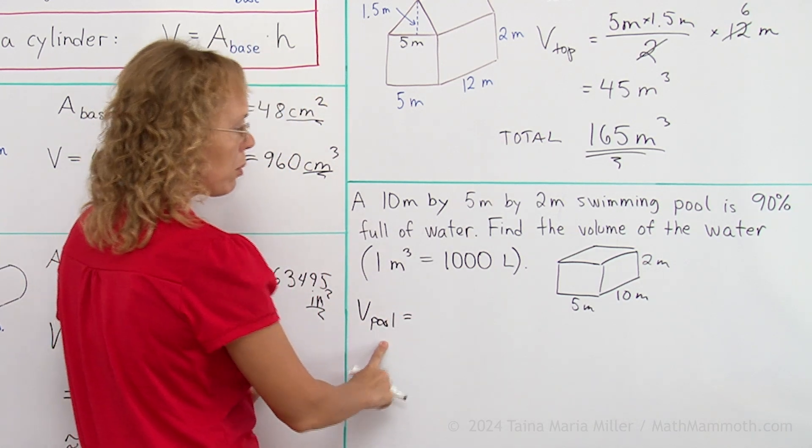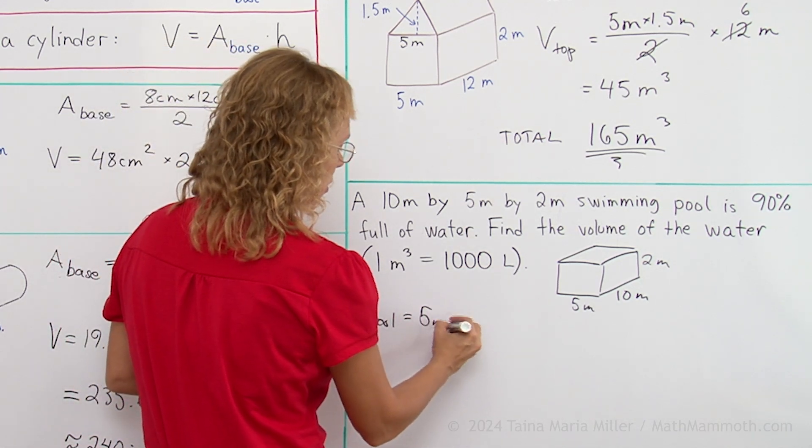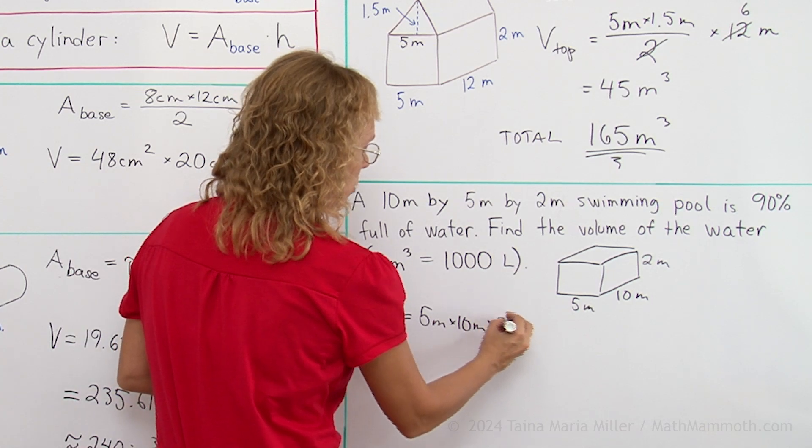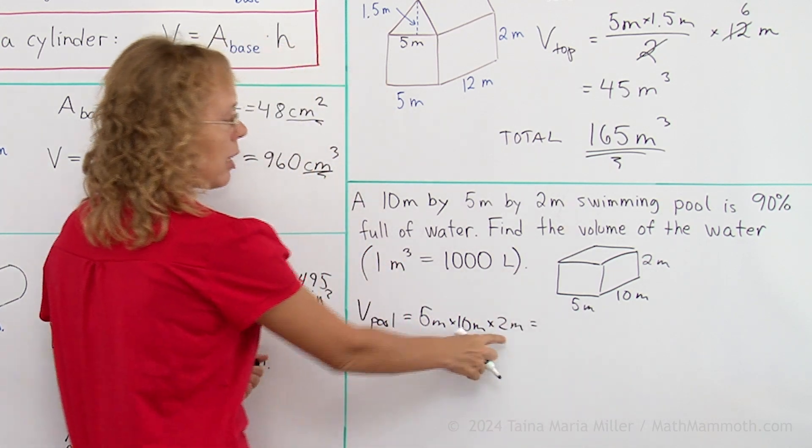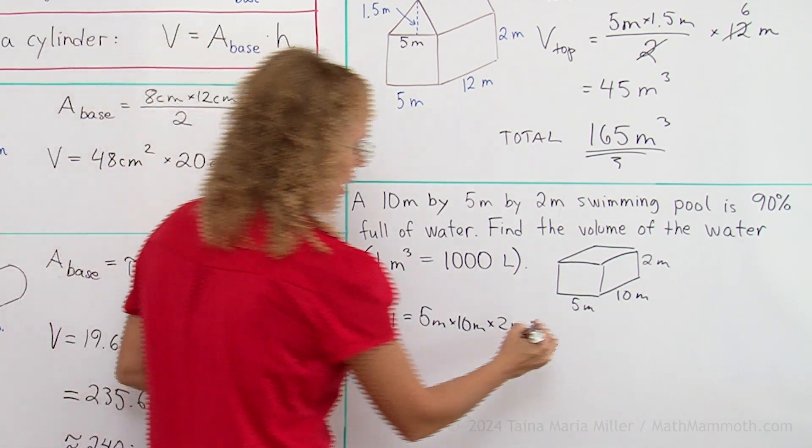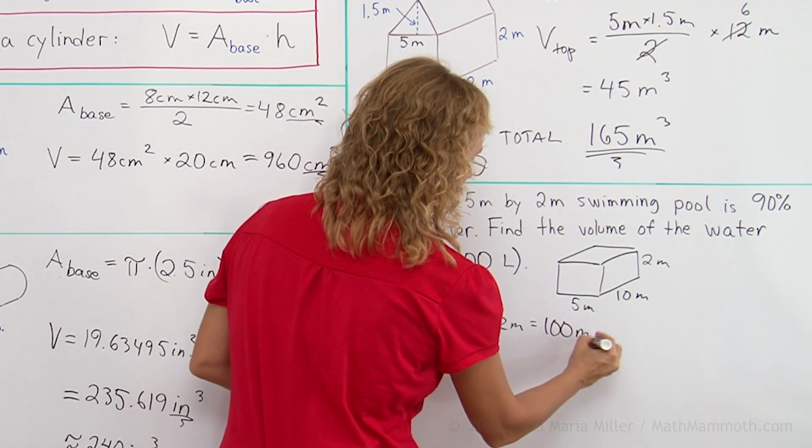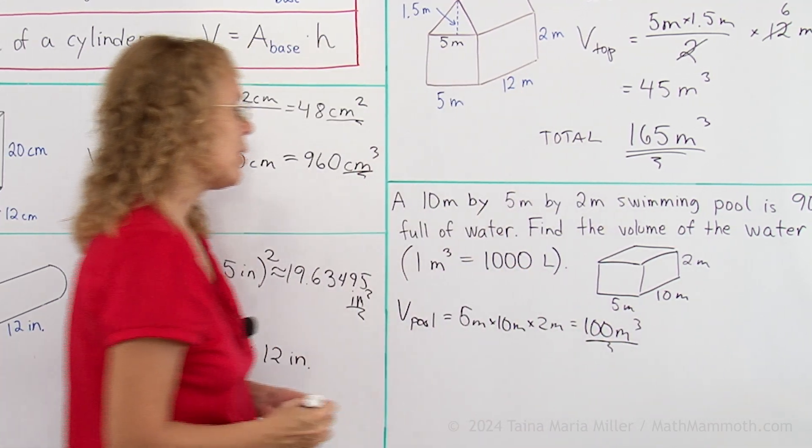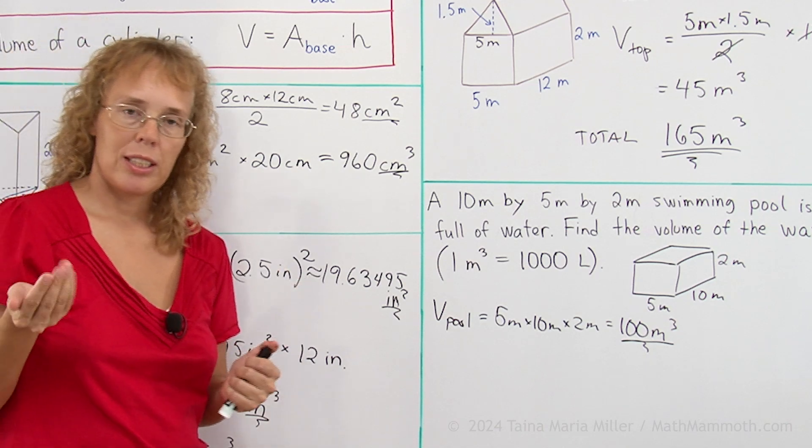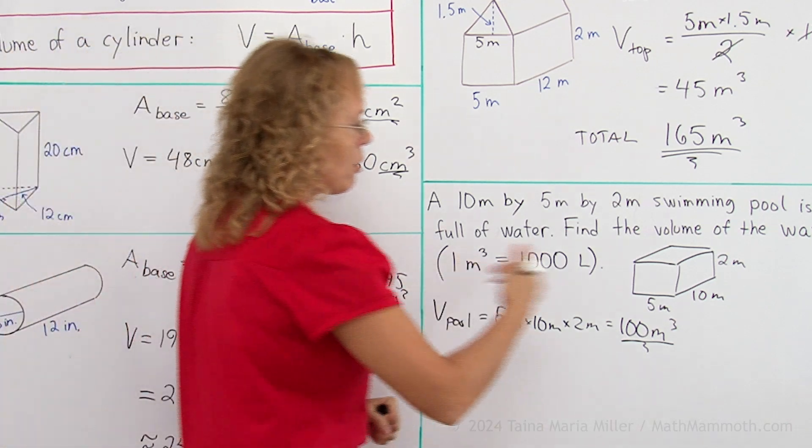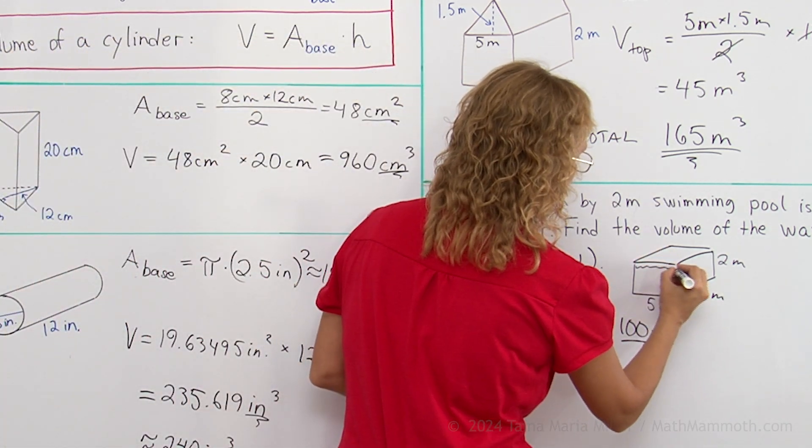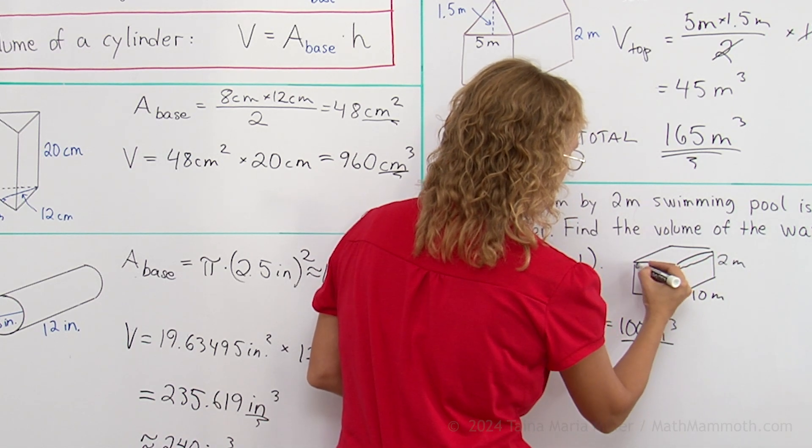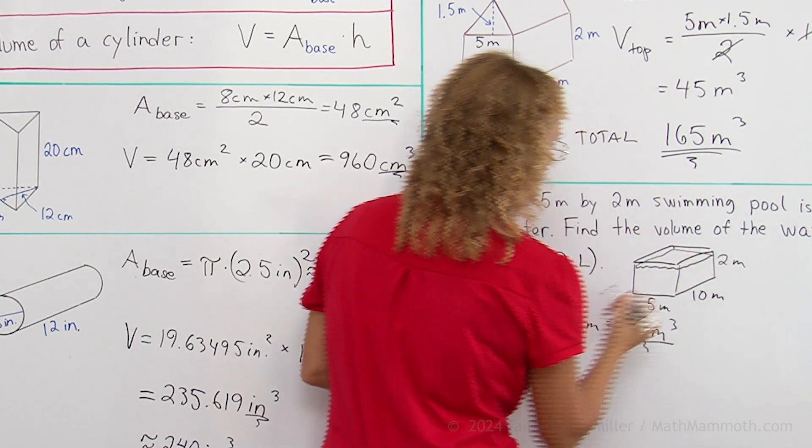Volume of the pool is 5 meters times 10 meters times 2 meters. 5 times 2 is 10, 10 times 10, 100 cubic meters. But it's 90% filled with water. The water is not to the top, the water is near the top there, but not quite to the top.